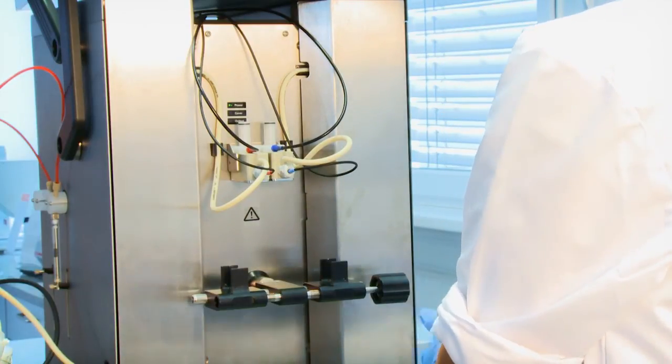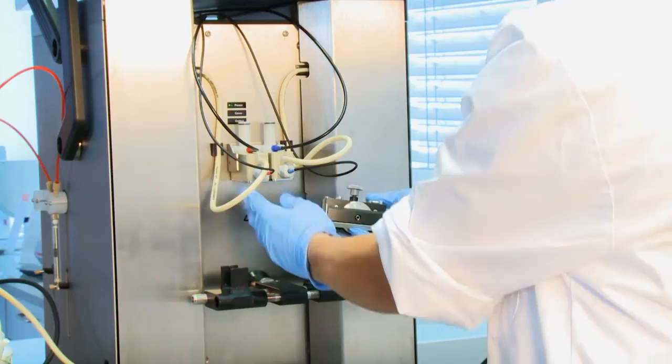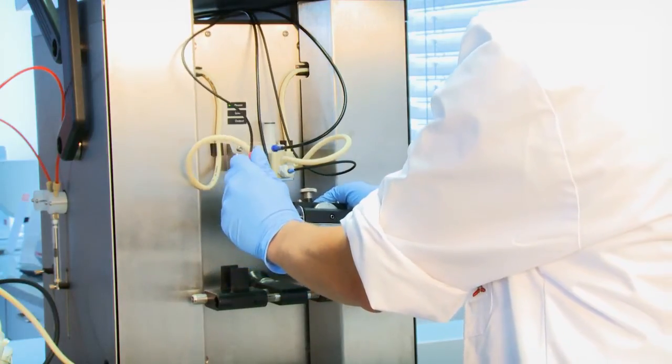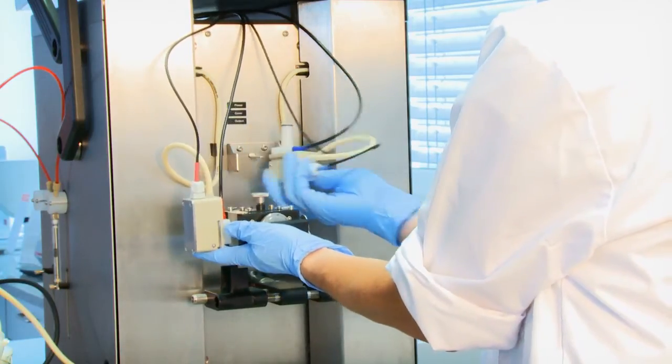Now you can mount the measuring heads of Surpass. The red head has to be on the left and the blue head has to be on the right.